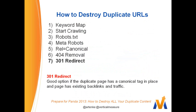A 301 redirect is what you want to do if the duplicate page has a canonical tag in place and the page has existing backlinks and traffic. If people are regularly visiting a particular page but you've developed a better-looking page with better content and more user engagement, use a 301 redirect — that way you're not killing the traffic and you're not getting rid of all those valuable links. Panda in 2013 is all about user engagement, and we don't know how high that can ratchet up.